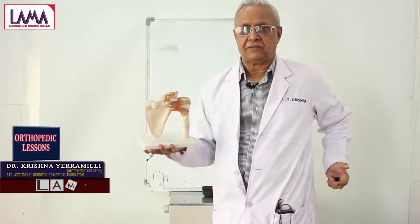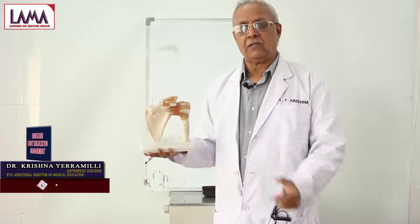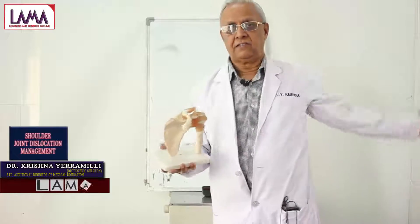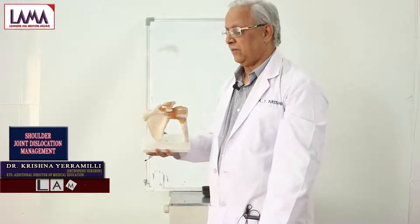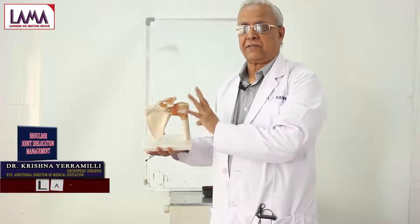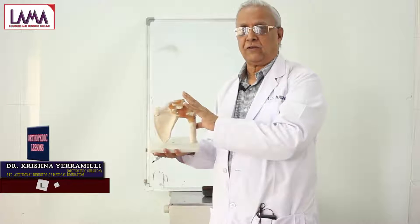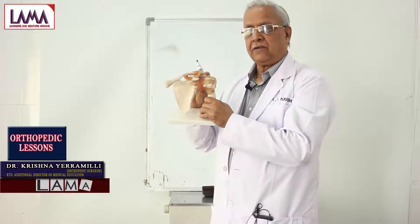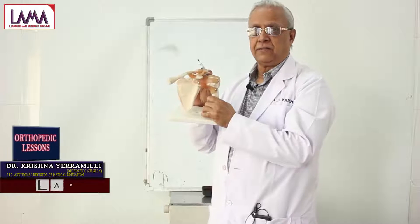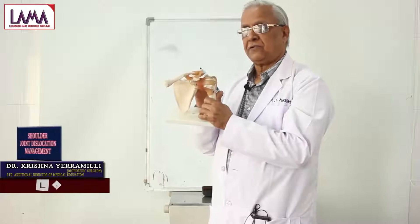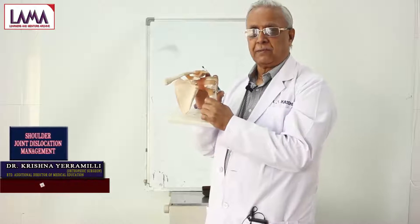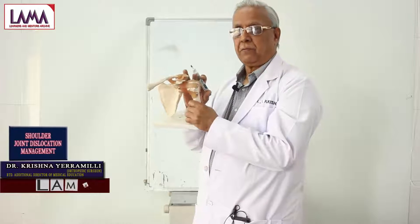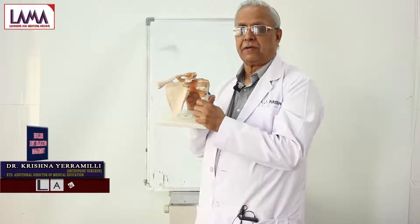And also forward flexion, backward flexion or extension. All these things put together mean the patient can do a complete rotation in 360 degrees, known as circumduction. Taking into consideration the wide range of mobility available here, this joint is more prone for dislocation, especially as the glenoid cavity is not as deep as the acetabular cavity in the hip. Similarly, the capsule is not very strong, because this is a non-weight-bearing joint, so the ligaments are not as strong when compared to the hip joint.